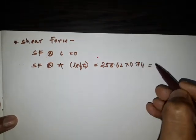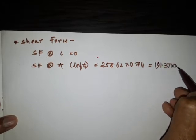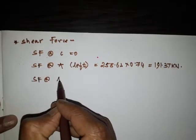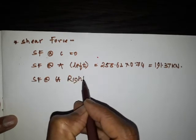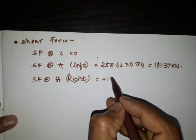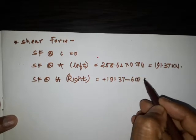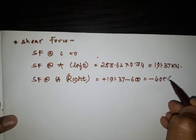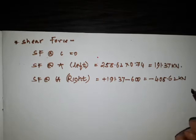Shear force at A left equals 258.62 × 0.74, giving 191.37 kN. Then shear force at A right: 191.37 minus 600, giving minus 408.62 kN.